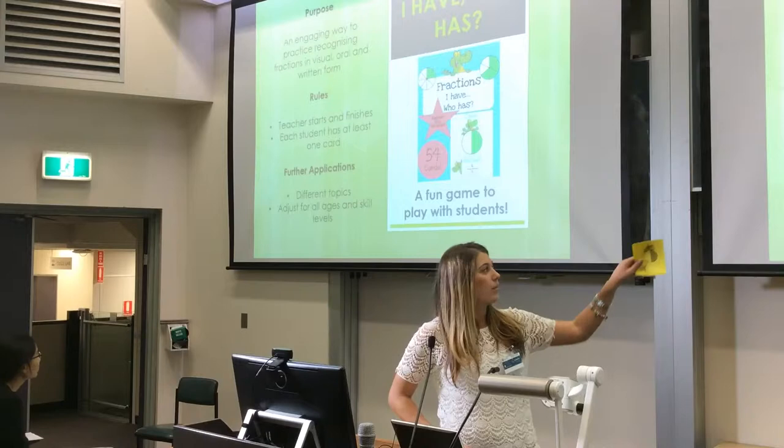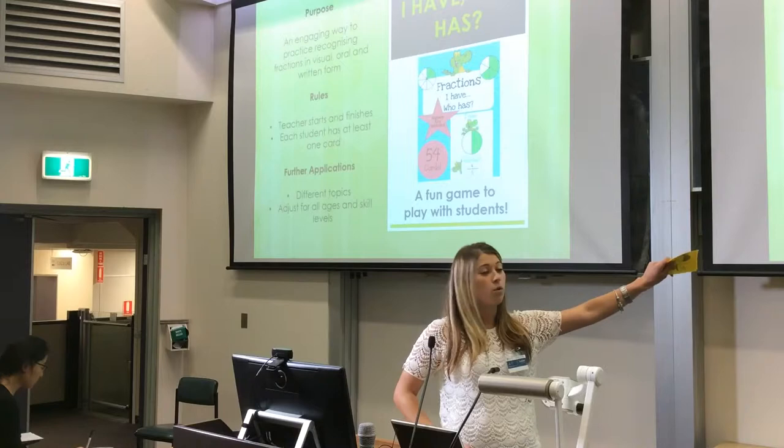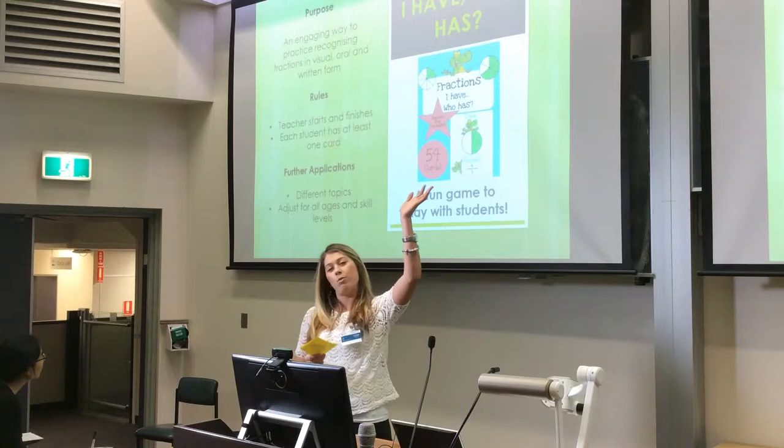So that's the diagram, then they'll say 'who has' whatever their written fraction is — so if it's four fifths, the person that has four fifths represented in their diagram will say 'I have four fifths,' and so on until it works around back to me.